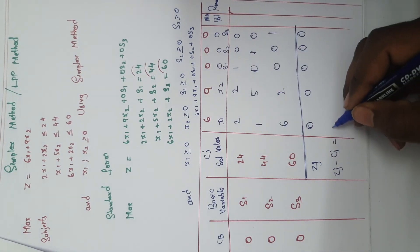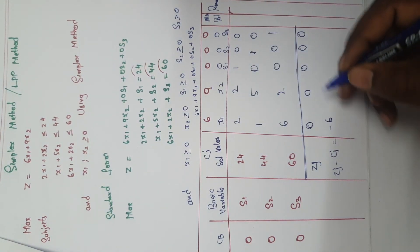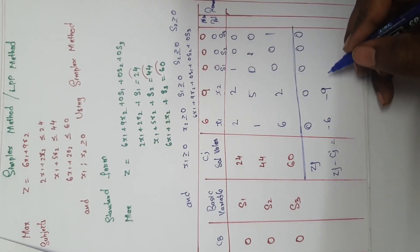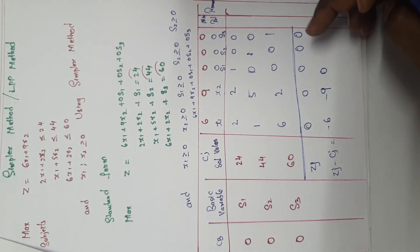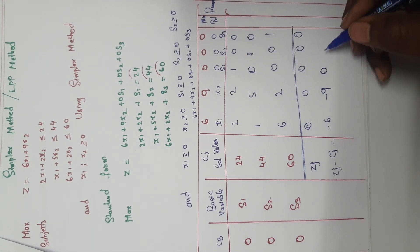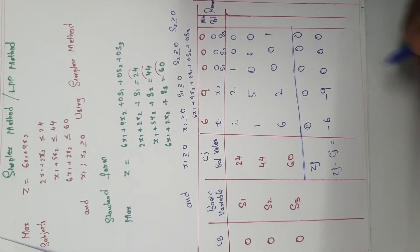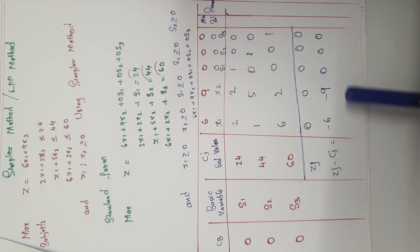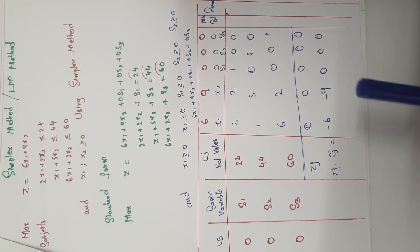Next step: compute zj − cj. zj is 0 for all columns. So: 0 − 6 = −6, 0 − 9 = −9, 0 − 0 = 0, 0 − 0 = 0, 0 − 0 = 0. You got the zj − cj values. Check if all are positive or negative. Here you are getting two negatives — −6 and −9 — and these two negatives you have to change.